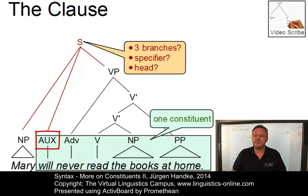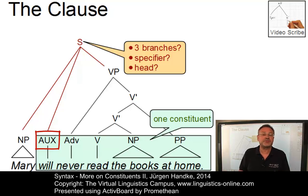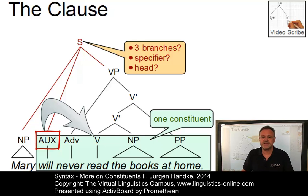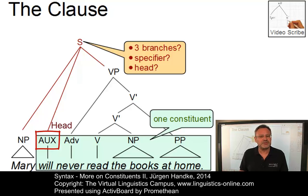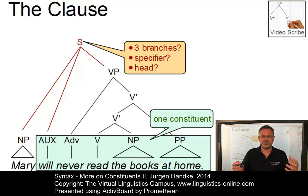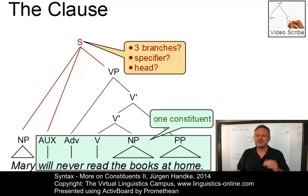Furthermore, auxiliaries appear to be heads of the whole sentence — they determine the properties of the verb. For example, will, as in our example, requires the bare infinitive. Has as an auxiliary requires the past participle, and so on. The auxiliary not only determines the type of verb but influences the entire verb phrase. So the suggestion is: the auxiliary and the verb phrase must be sisters of a common phrasal category.